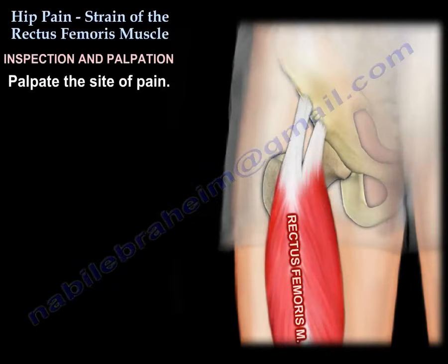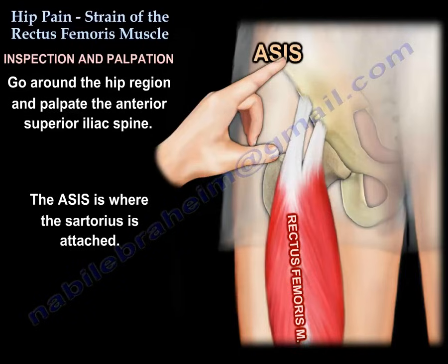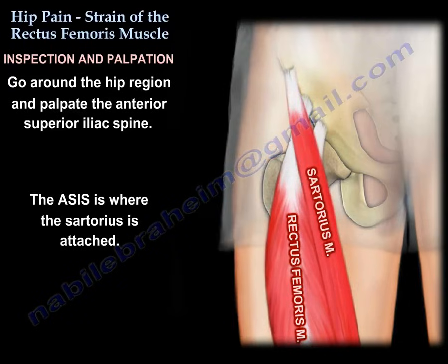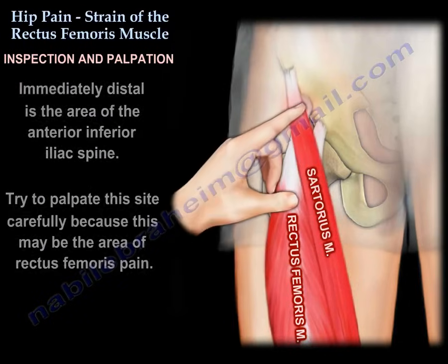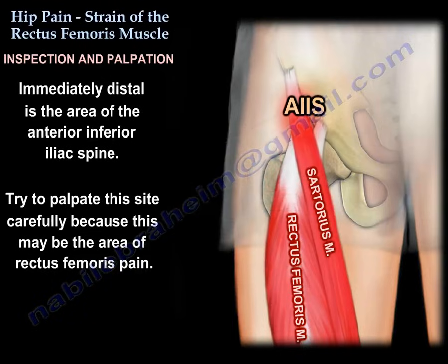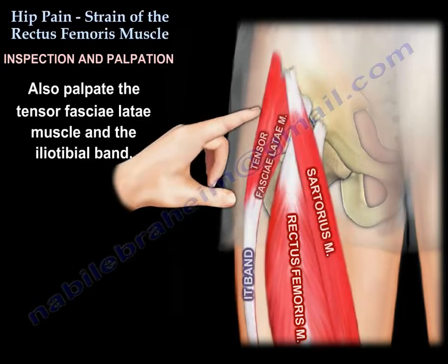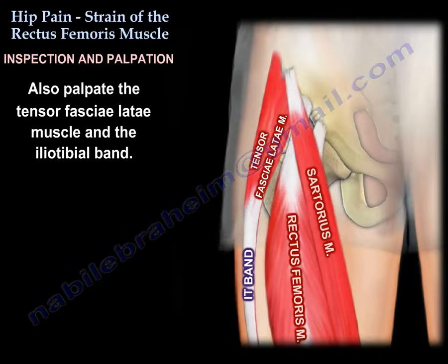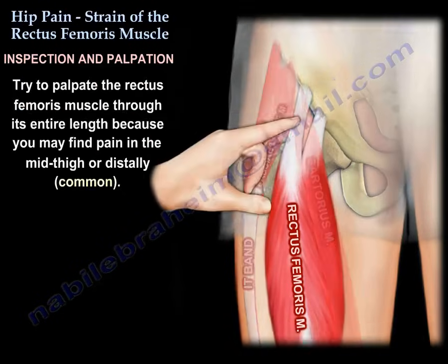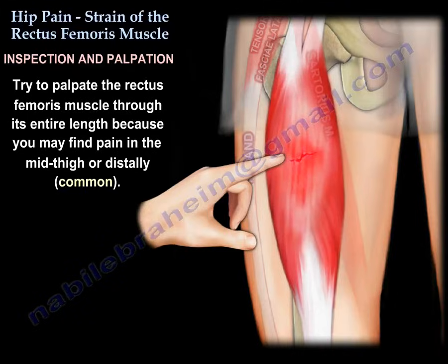You are going to palpate the site of the pain. Go around the hip region and try to palpate the anterior superior iliac spine, where the sartorius is attached. Immediately distal to that, you find a soft spot or a little groove followed by the anterior inferior iliac spine. Palpate that site carefully because it may be a rectus femoris sprain if this area is painful. Also palpate the tensor fasciae latae and the iliotibial band around the hip area. Try to palpate the rectus femoris muscle through its entire length because you may find pain in the mid-thigh or distally, which is common.